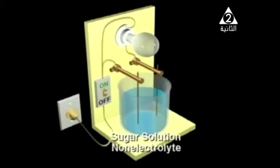As the following animation will show, if you bring a sugar solution and connect it to a source of electric current and a lamp, you will find that the solution does not conduct electric current and the lamp does not light. This means that sugar is a non-electrolyte — it does not contain ions when dissolved in water.